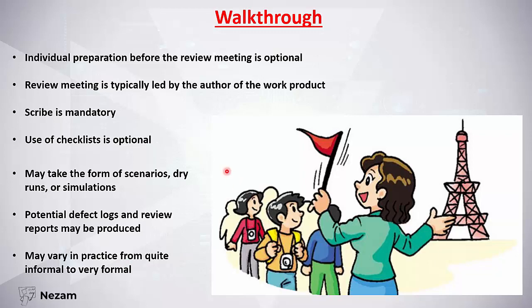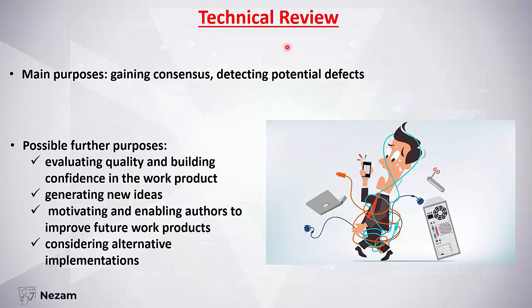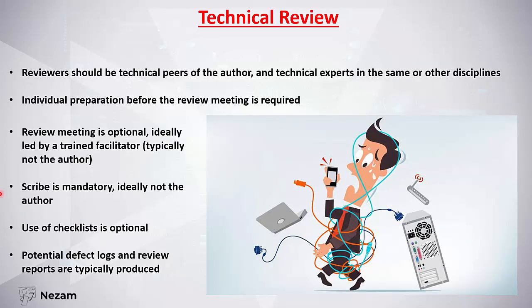The technical review is more formal and more specified than the informal review and the walkthrough. Its purpose is gaining consensus and detecting potential defects. Further purposes include evaluating work product quality, generating new ideas, motivating authors to improve future work products, and considering alternative implementations. Reviewers should be technical peers of the author or technical experts — so when reviewing test cases, reviewers should be testers; when reviewing code, reviewers should be developers.